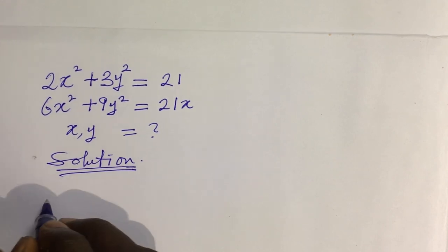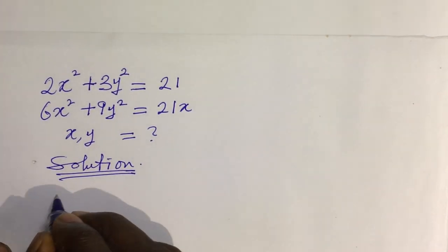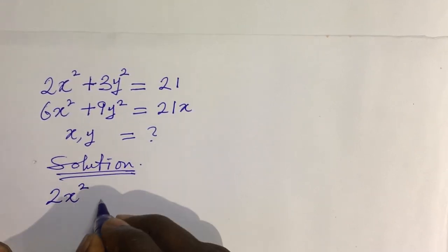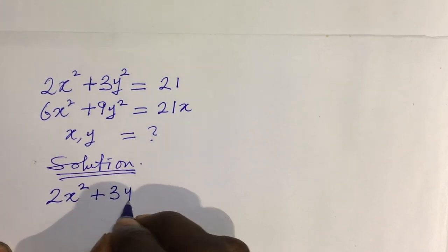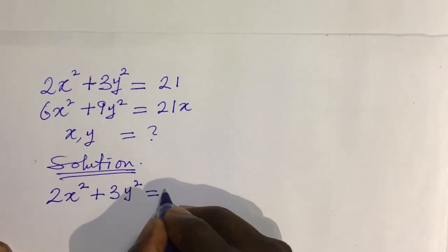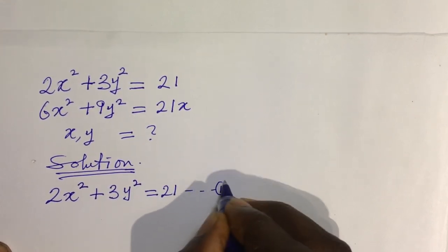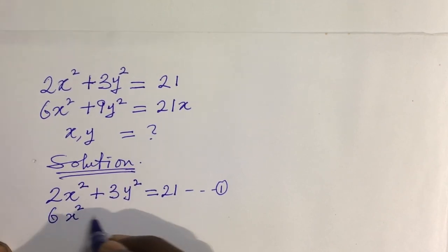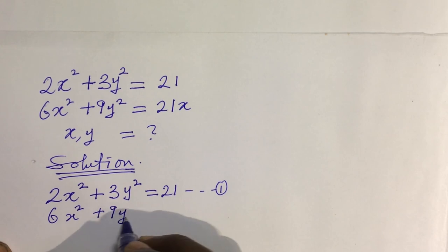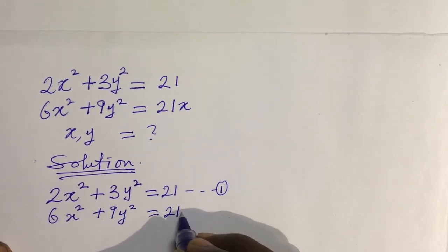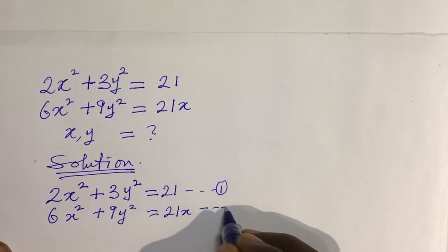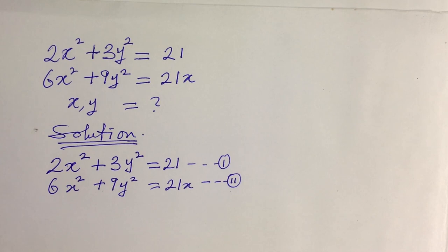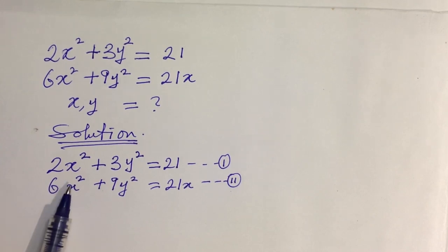We put down our equations: Equation 1 is 2x² + 3y² = 21, and Equation 2 is 6x² + 9y² = 21x.